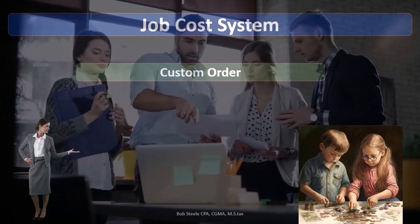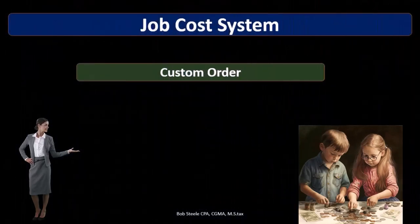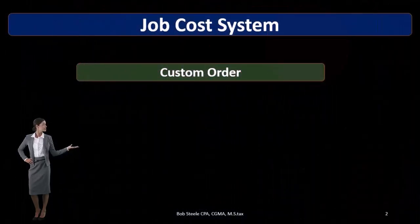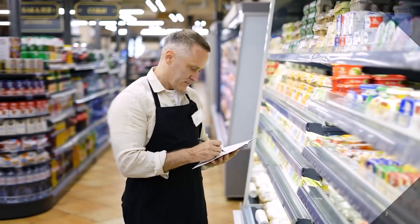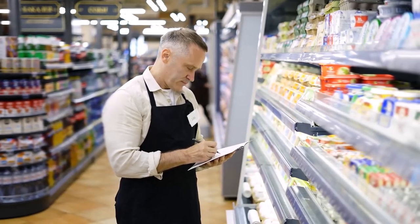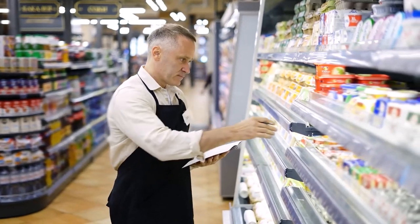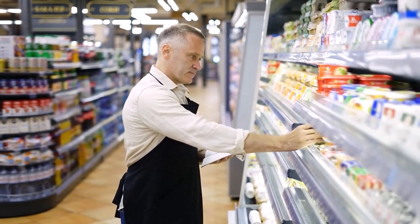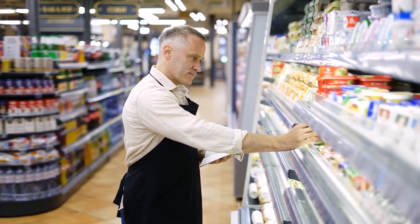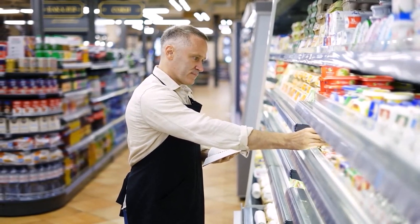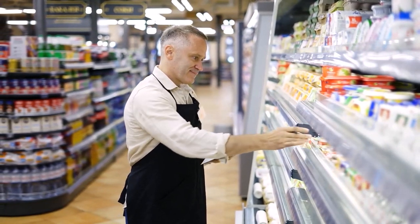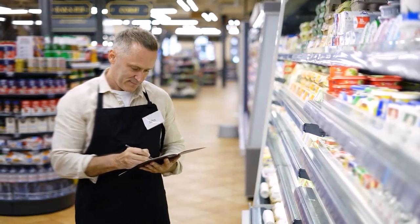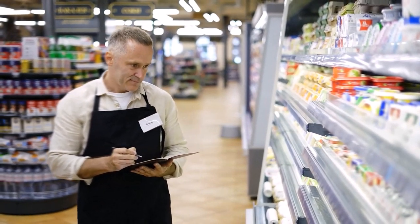A job cost system means that we're going to apply the cost of the inventory to particular jobs — we assign the costs to a specific job — as opposed to a process cost system where we assign costs to a process as we go.